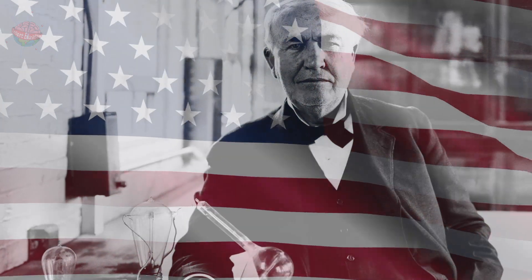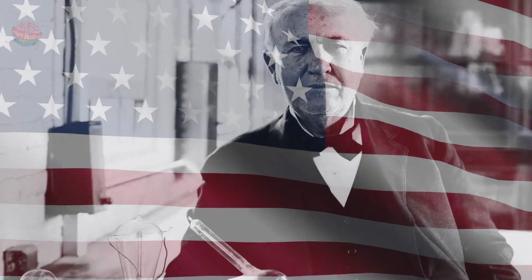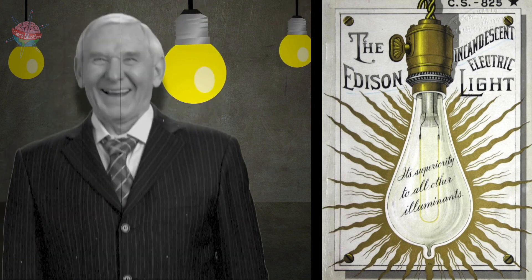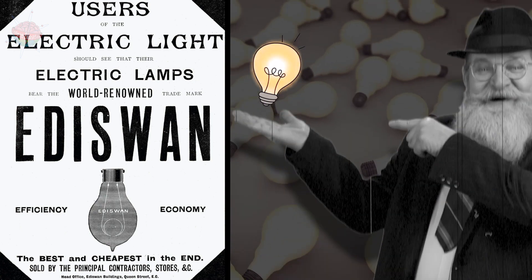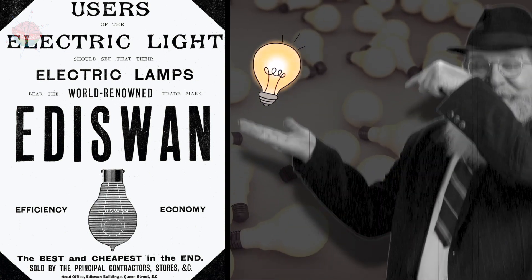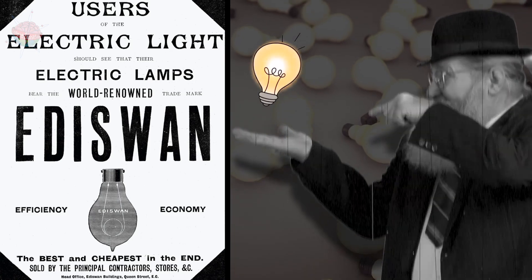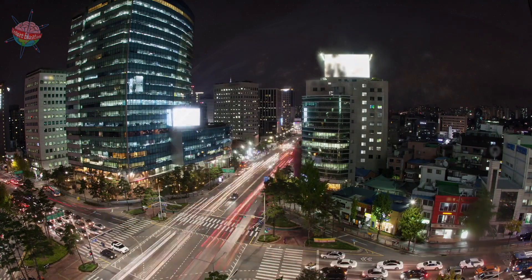Meanwhile, in America, Thomas Edison set up the Edison Electric Light Company. He aimed to light up the whole of New York City with his lightbulbs. Then, in 1882, Edison and Swan combined their businesses and knowledge. They set up the Edison and Swan United Electric Company and the rest, as they say, is history.